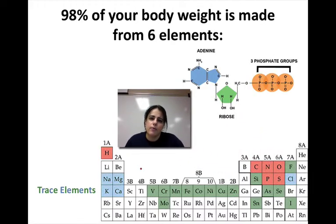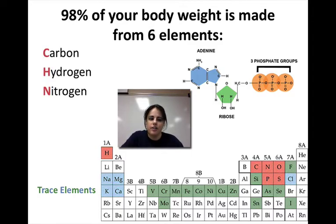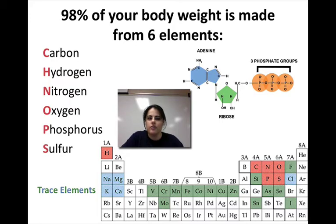98% of your body weight is made up from only six elements and you may remember SCHNOPS. So SCHNOPS, we have carbon, hydrogen, nitrogen, oxygen, phosphorus, and sulfur.